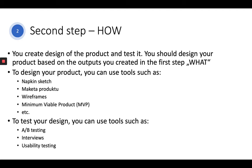In the second step, after the first, when you design your product, you can use tools such as napkin sketches — just a quick sketch on a piece of paper to give you some idea of your solution — some mockup, wireframe, minimum viable product, and so on. You have different approaches for creating a prototype or idea of your product.